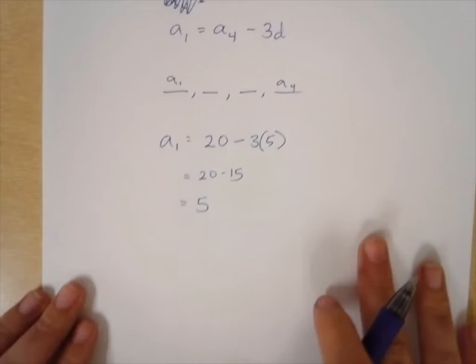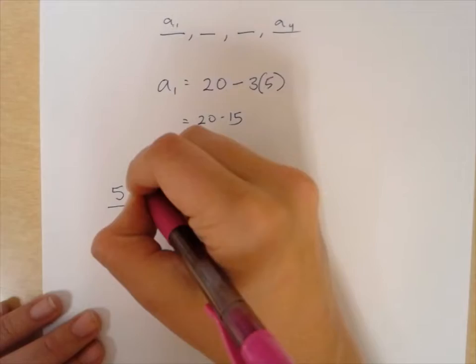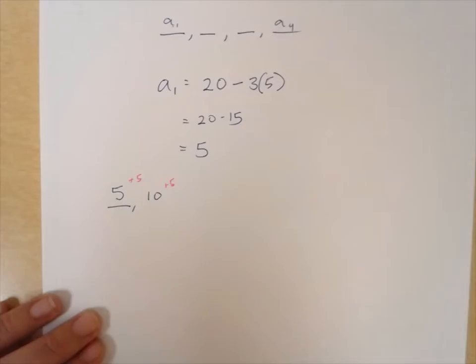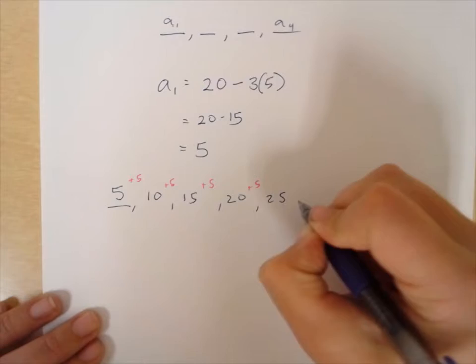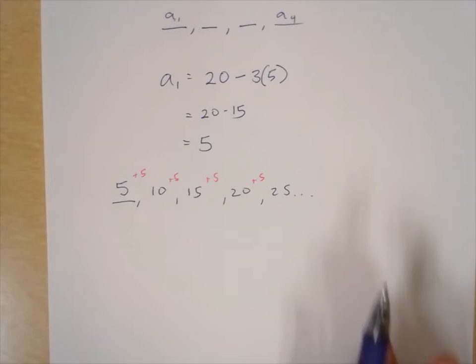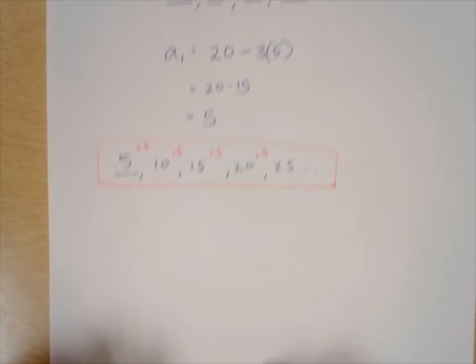From all this information, we know the first term is 5. Using the common difference of 5 each time, we get 5, 10, 15, 20, 25, and so on. That's how we create a sequence when we're not given the first term or the difference directly. That's our sequence.